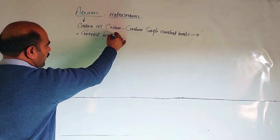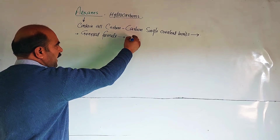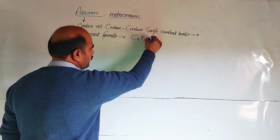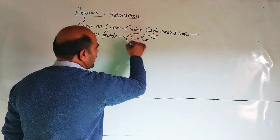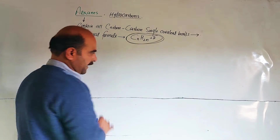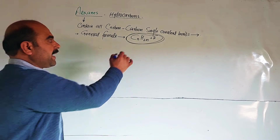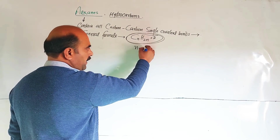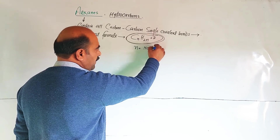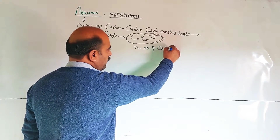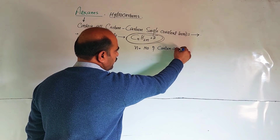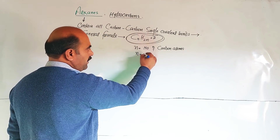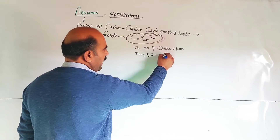General formula: CₙH₂ₙ₊₂. This is the general formula for alkanes, where N means the number of carbon atoms. N can be 1, 2, 3, and so on.